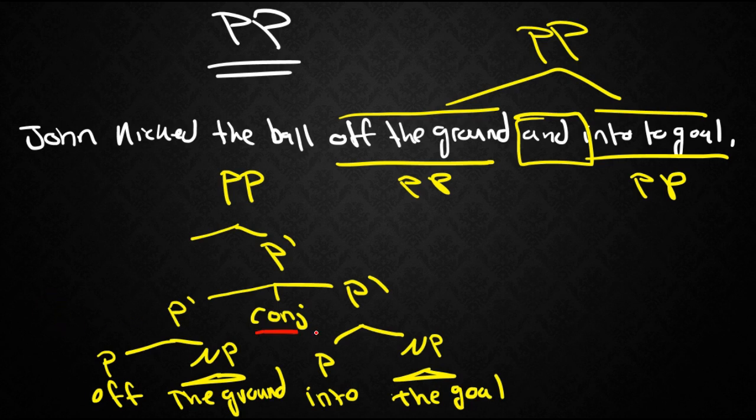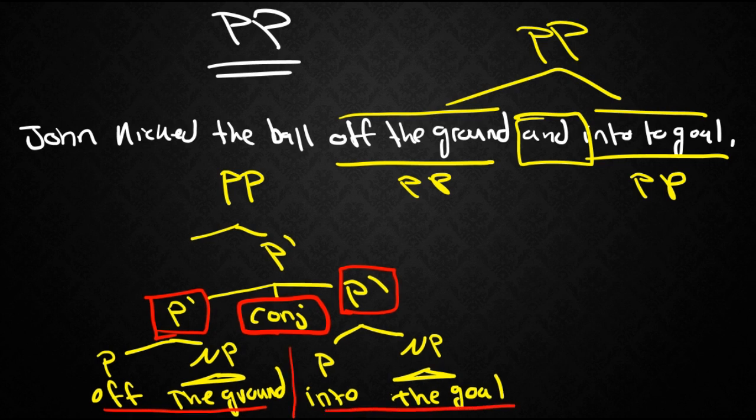The way this would look is like so. So as you see here we have our conjunction connecting two P bar levels that each form constituents on their own off the ground and into the goal. Now we don't necessarily have to find enough evidence to motivate bar levels or intermediate levels in every single type of phrase.